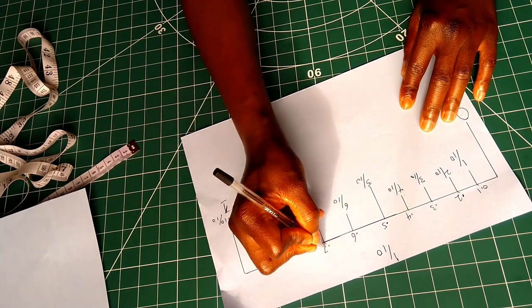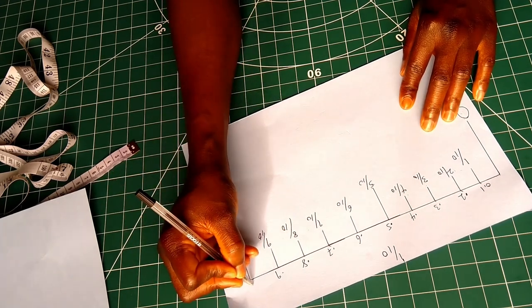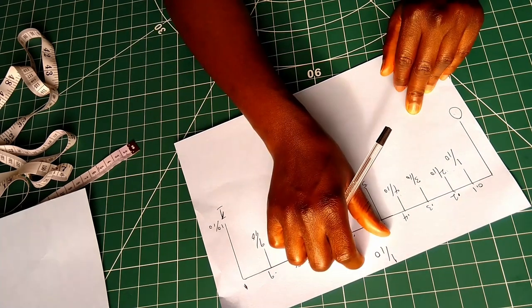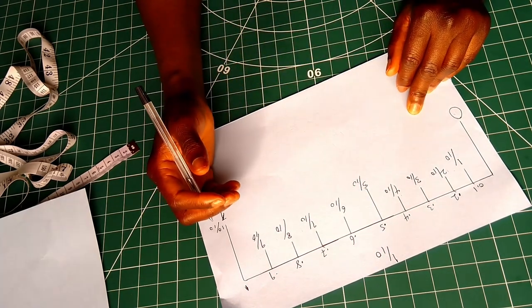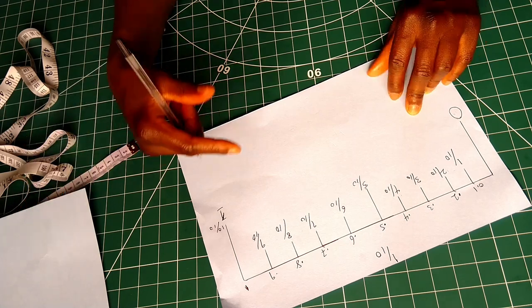7 over 10 is 0.7. 8 over 10 is 0.8. 9 over 10 is 0.9. 10 over 10 is 1. So when you're converting the centimeters to decimals, it's very easy, unlike the inches.